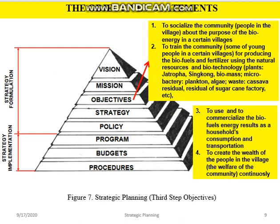Objectives: (1) to socialize the community people in the villages about the purpose of biofuel in certain villages; (2) to train some young people in certain villages for producing biofuel and fertilizer using natural resources and biotechnology — plants like jatropha, cassava, biomass, microbacteria, plankton, algae, weeds, cassava residual, and others; (3) to use and to commercialize the biofuel energy result as household consumption and transportation; (4) to create the wealth of the people in the village — the welfare of the community continuously.